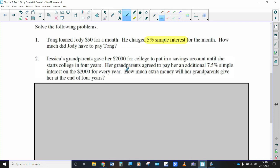So go through and use the 5D process. If this is a simple interest problem, then the formula is I equals P times R times T, PRT. And so I would always recommend you start off every single one of these problems by defining each one of these according to the problem that's been given. So I'm looking here and it says Tong loaned Jody $50 for a month. So that's the amount of money that we're working with. That's what we're starting with. That's going to be your principal. So let's just write down $50 for the principal. He charged 5% simple interest for the month.